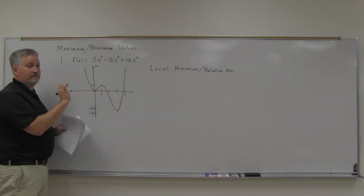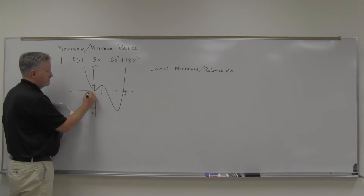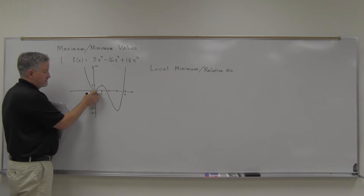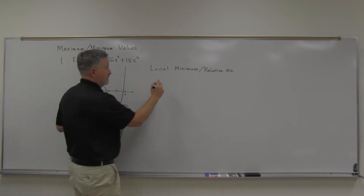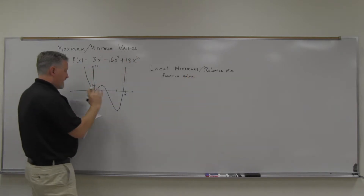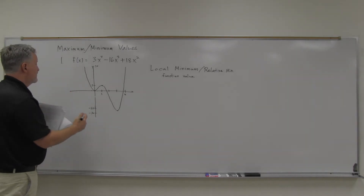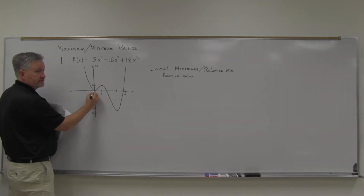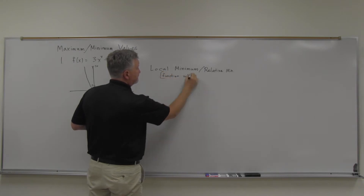To get more specific — it's a minimum in what way? The x value is not a minimum, because if I look at x values on either side, there are smaller x values. But what's minimum about it is the y value. So when we say local minimum or relative minimum, we're meaning function-value-wise. It's a function value that's less than the ones around it. In this case, the function value is actually zero, and that would be the local minimum.